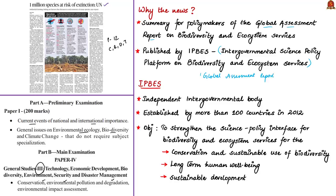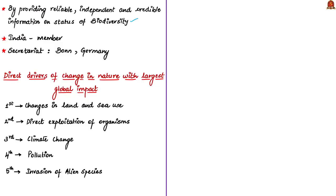The six-chapter full report is not yet released and will be done later this year. IPBES is an independent intergovernmental body established by more than 100 countries in 2012. Its objective is to strengthen the science-policy interface for biodiversity and ecosystem services for the conservation and sustainable use of biodiversity, long-term human well-being, and sustainable development. This is done by providing reliable, independent and credible information on the status of biodiversity. India is also a member of this platform. It is a fully intergovernmental body — only governments of recognized countries can be full members; any other entities can only be observers. The secretariat is located in Bonn, Germany.